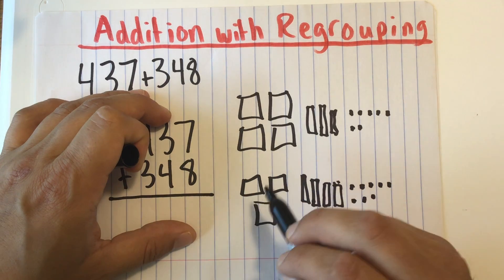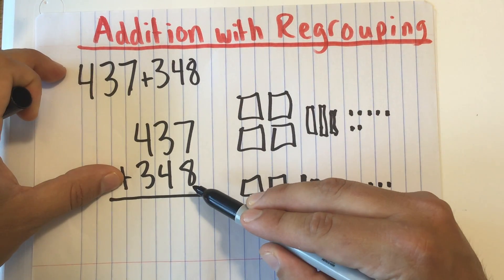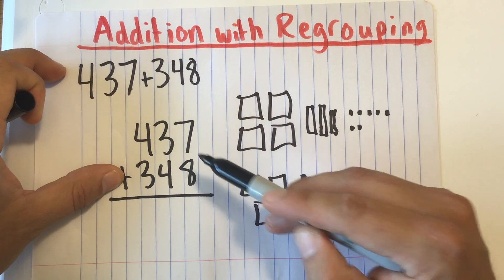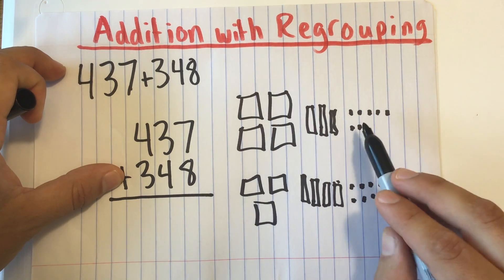Alright, now we're going to add these two together. And remember, we always start on the right and add the ones. So we're going to do 7 ones plus 8 ones. So let's see what happens over here when we do that.